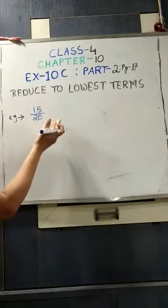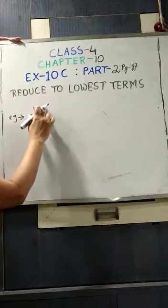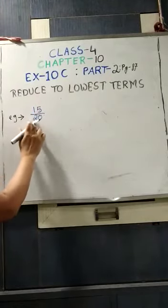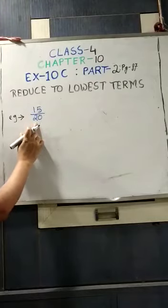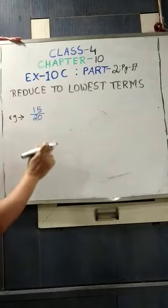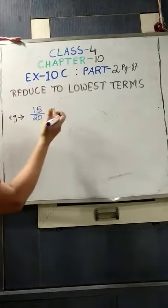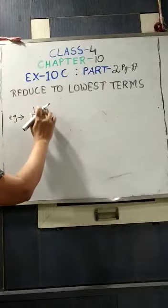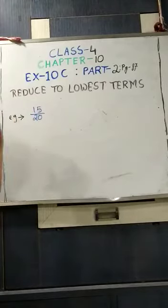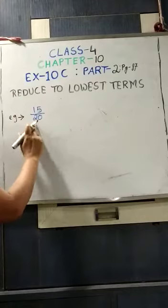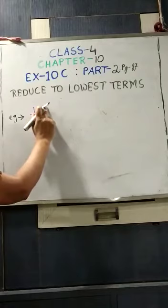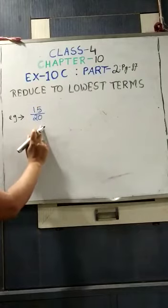So we cannot take 2, so we will go for 3. 15 is divisible by 3 — 3 fives are 15. But 20 is not divisible by 3, so we also cannot take 3. Next number is 4. 15 is not divisible by 4 since 15 is an odd number. 20 is divisible by 4, but as 15 is not divisible we cannot take 4 either.